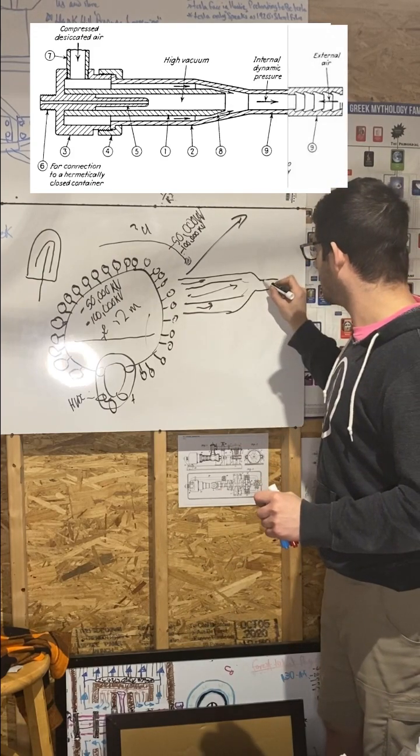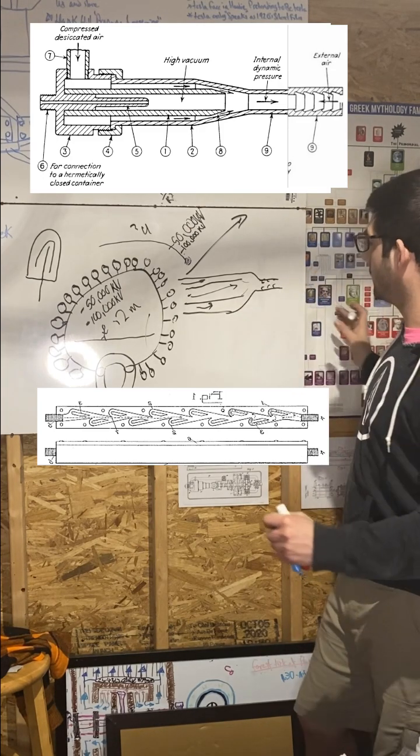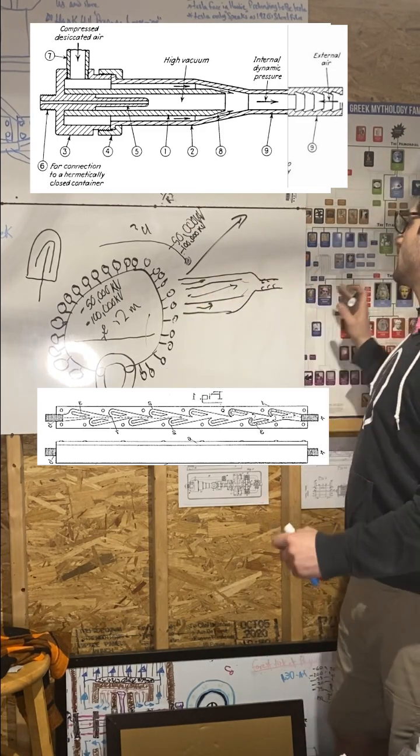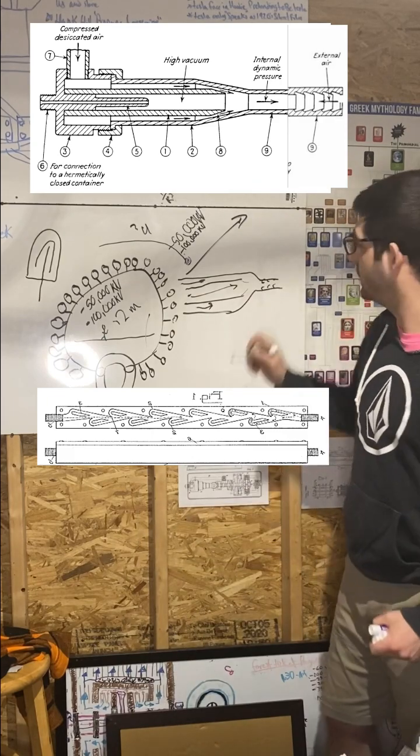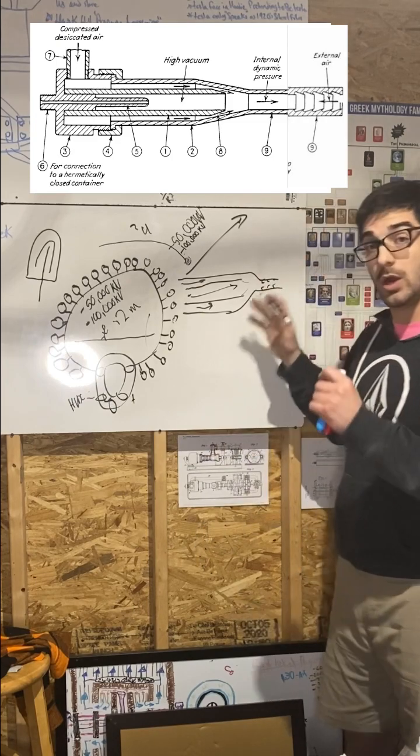And then on the edge here, he talks about doing similar shapes like his Tesla valve to help reduce the amount of energy that's required for pushing it because any amount of atmospheric air trying to rush in will use some of its own energy to slow itself down before it gets in there. It's not the best, but it works.